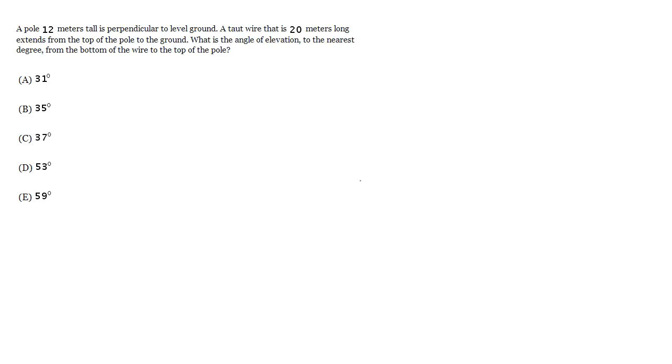A pole 12 meters tall is perpendicular to level ground. A taut wire that is 20 meters long extends from the top of the pole to the ground. What is the angle of elevation to the nearest degree from the bottom of the wire to the top of the pole?